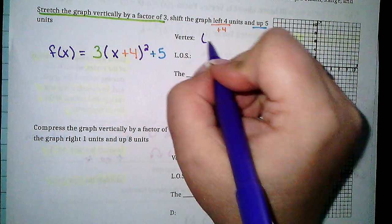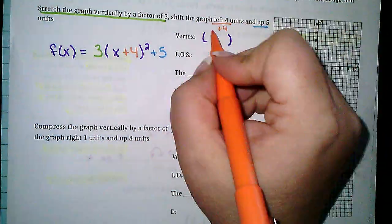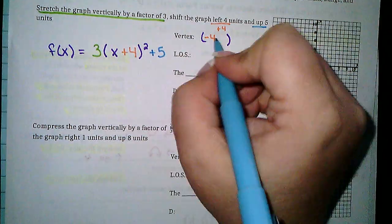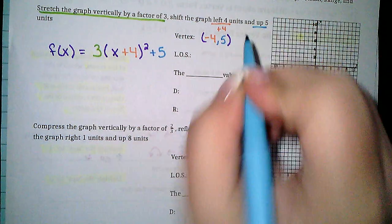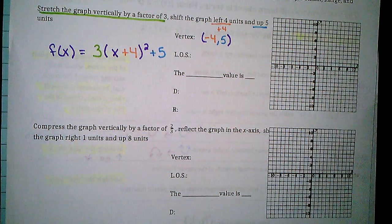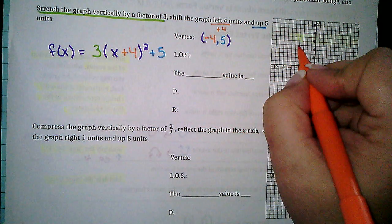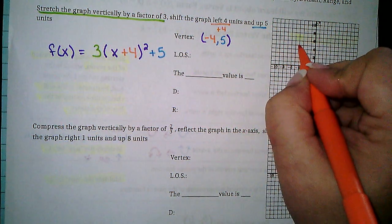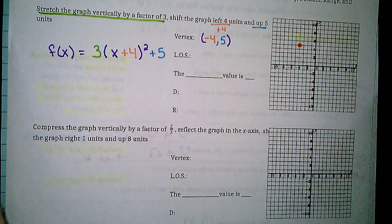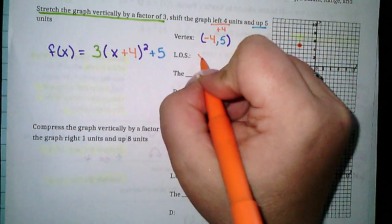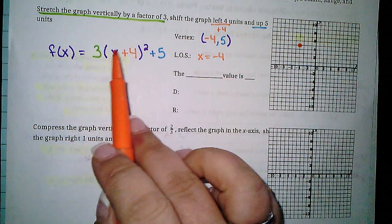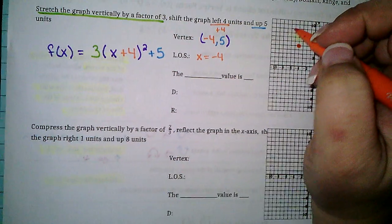My vertex: opposite of the inside — the inside says positive 4, so x value is negative 4. Outside stays the same, so y value is positive 5. Vertex is at (-4, 5). The line of symmetry is x equals negative 4, because the line of symmetry goes where your left-right shift goes.